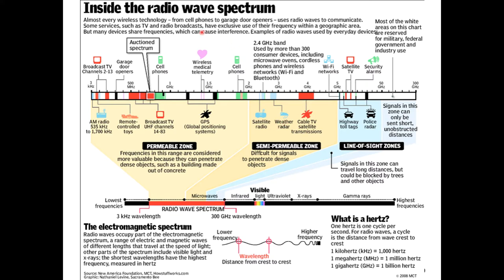Looking at the radio spectrum — the range of frequencies — many different applications use different frequency bands. Cell phones use frequencies just below 1 GHz up to about 2 GHz, while 5G uses very high frequencies such as 60 GHz. Garage door openers and TV broadcast channels operate in the kilohertz to megahertz range. Satellite TV, security alarms, and many other applications all use portions of the radio spectrum.